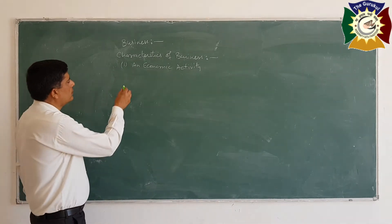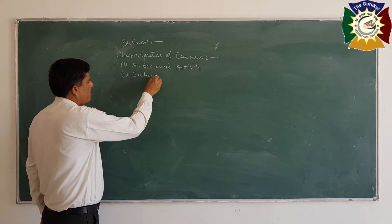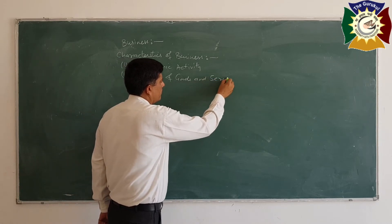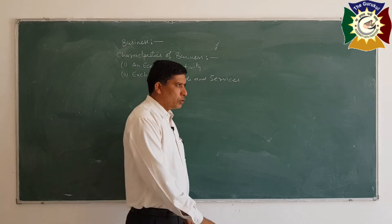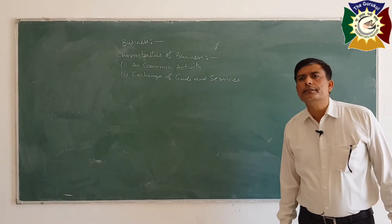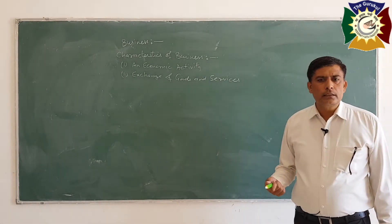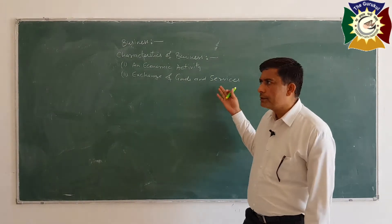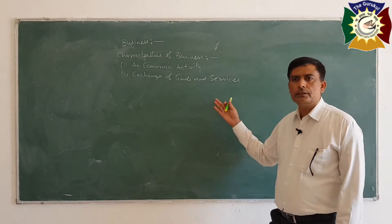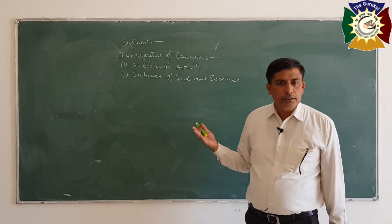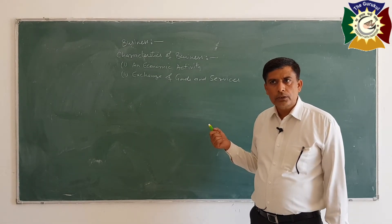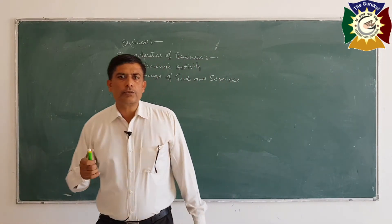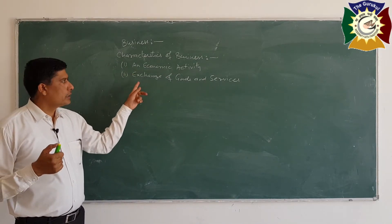The second feature is exchange of goods and services. In business, various kinds of goods and services are provided. Like a cloth merchant purchases clothes from the supplier and sells them to customers — that is exchange of goods. Sometimes services are exchanged, such as service providers like electricity companies, water supply, transport services, banking services, and insurance services. Any activity concerned with the exchange of goods and services will be called a business.